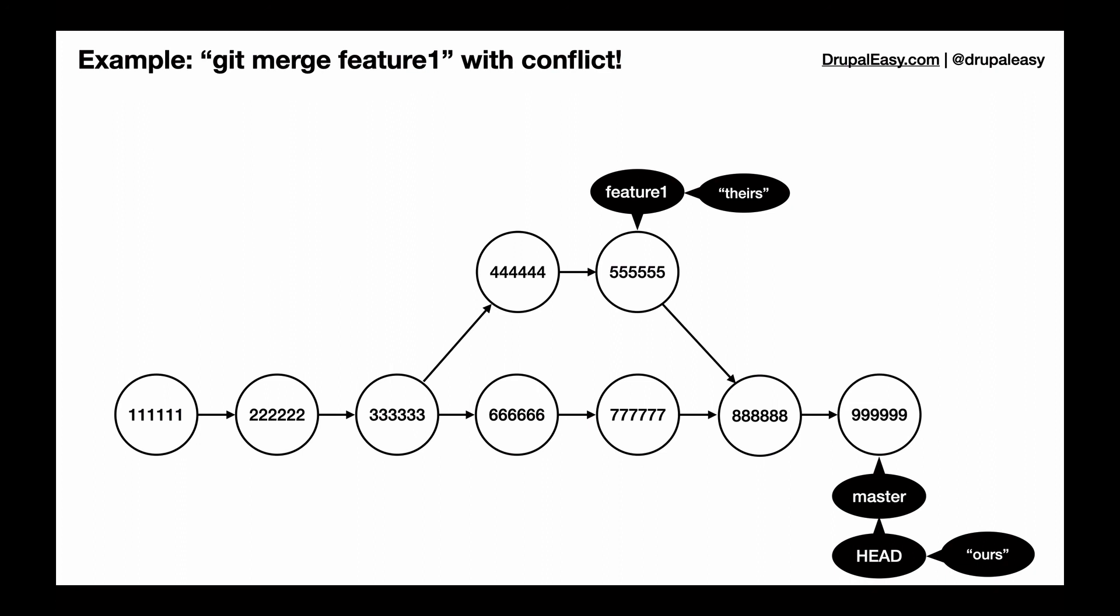And in general, that is how you rectify composer.lock code conflicts in your divergent branches. Okay, thanks for watching.